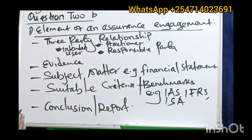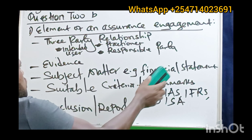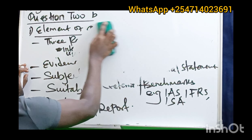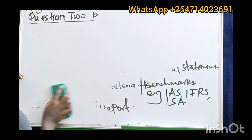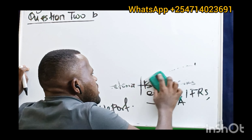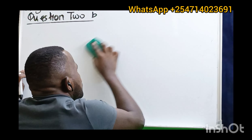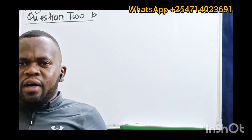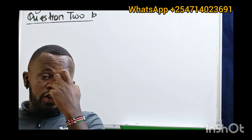Those are the five elements of an assurance engagement. The exam asked for four, but I've given you five. Many people have wondered how to pass this paper. Some have been failing. I'm telling you, if you've been in my class, failing is not an option. No one fails in my class. Last sitting, everyone passed this auditing and assurance paper. I normally do past paper questions and tell my students areas they should expect in the exam.